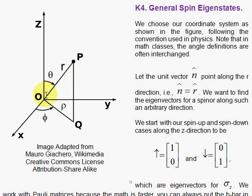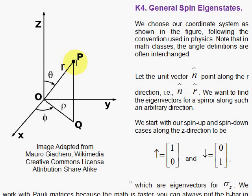If you have this arrangement, think of this as a door. Then 1 times the cosine of theta gives you the height of the door, and 1 times the sine of theta gives you the top of the door, which is the same as the bottom of the door. So rho is sine of theta, and this height is cosine of theta. You can also think of rho and phi as polar coordinates in the xy plane.